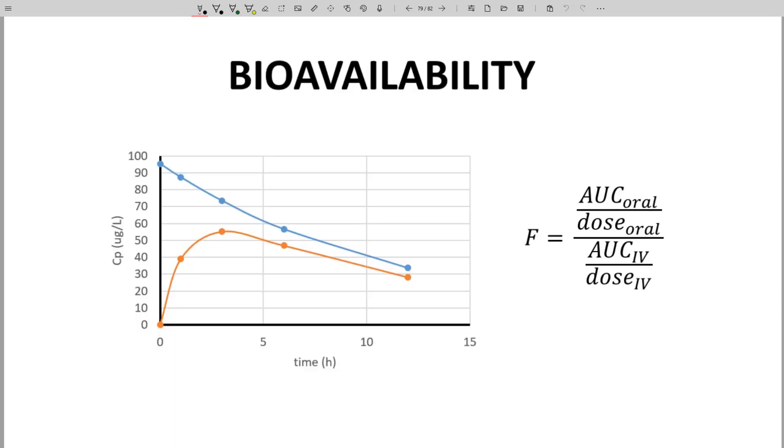In earlier discussions on bioavailability, we quantified the idea through a variable F. F was defined by the equation to the right, which required us to determine AUC for oral and IV doses. We applied this equation to the graphs to the left, which depict a molecule with a bioavailability of 76%. F equals 0.76.